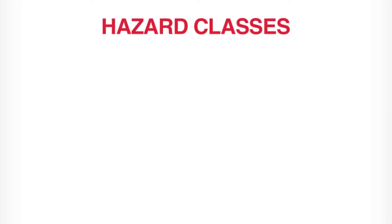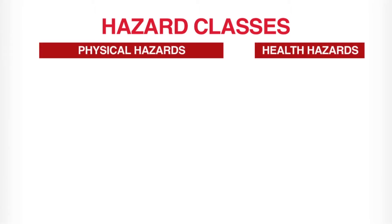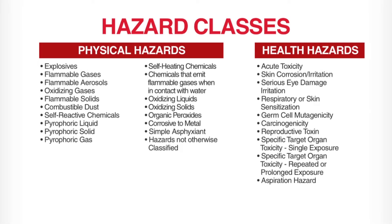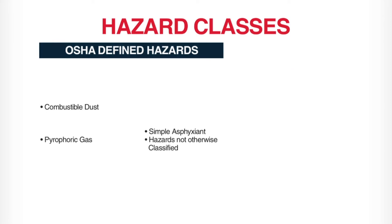Under OSHA's new system, there are 30 hazard classes, which are broken into two types of hazards: physical hazards and health hazards. Under the 30 hazard classes, four are not described by GHS but are considered to be OSHA-defined hazards. These four hazard classes are combustible dust, pyrophoric gas, simple asphyxiant, and hazard not otherwise classified.